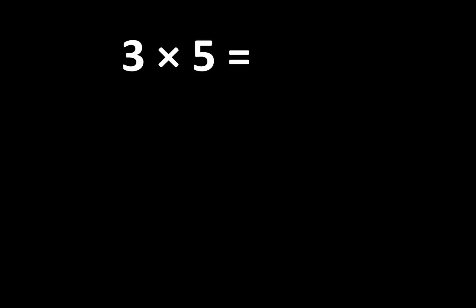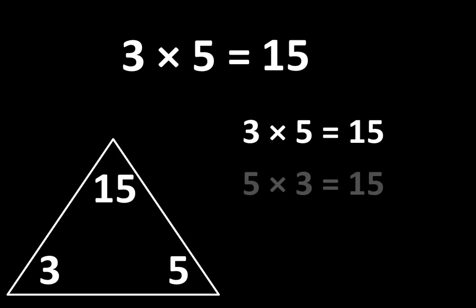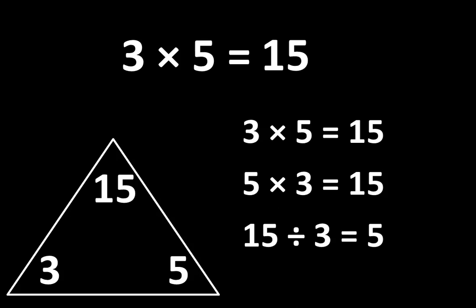3 times 5 is equal to 15. Let's examine some ways that 3, 5, and 15 are related to each other. To begin, if 3 times 5 is equal to 15, then 5 times 3 is also equal to 15. And since multiplication is related to division, we also know that 15 divided by 3 is equal to 5, and 15 divided by 5 is equal to 3.